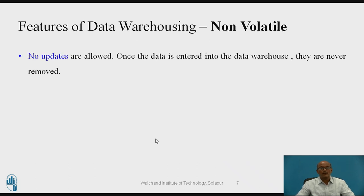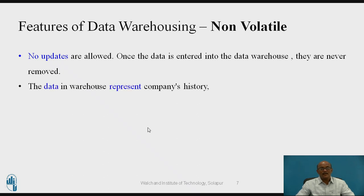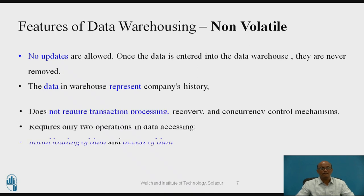The fourth one is non-volatile. No updates are allowed. Once the data is stored, we cannot change the data and it cannot be removed from the data warehouse. The data in a warehouse represents the history of the company. It does not require transactional processing or recovery and concurrency control mechanisms. It requires only two operations: initial loading of the data and accessing of the data.